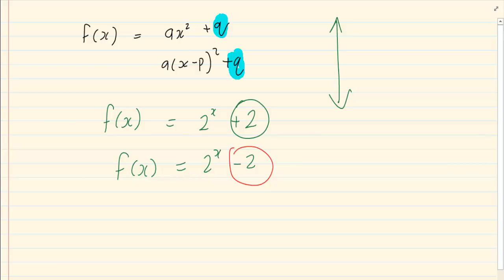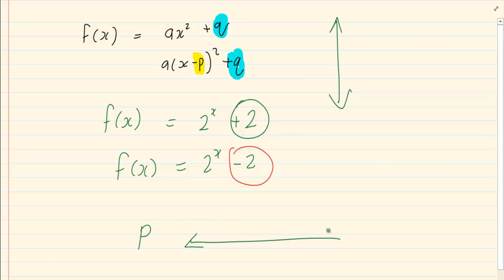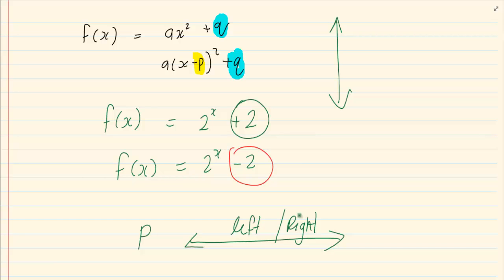What was the effect of p? Our p always moved our graphs left or right. You wouldn't see this as much in standard algebraic graphs except the parabola, but you would have seen it a lot in trigonometry. If I had x minus 30 degrees, it meant the graph moved 30 degrees to the right. If I had x plus 30, the graph moved 30 degrees to the left — always opposite to the original sign.